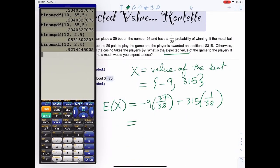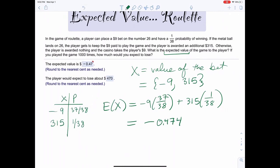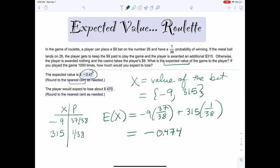It's not that much data. So if I clear this, I get negative 9, 37 divided by 38 plus 315, 1 divided by 38. So we get negative 0.474, whatever you want to round to. They round to the nearest cent, so they just put 47 cents negative. That's how you find the expected value of a roulette problem.